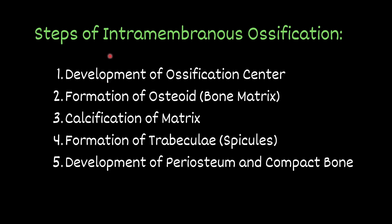There are several steps in the process of intramembranous ossification. Step one: development of the ossification center. Step two: formation of osteoid or bony matrix. Step three: calcification of matrix. Step four: formation of trabeculi and bony spicules. Step five: development of periosteum and compact bone.